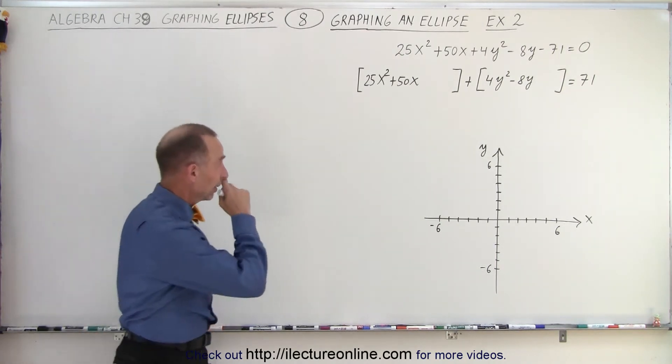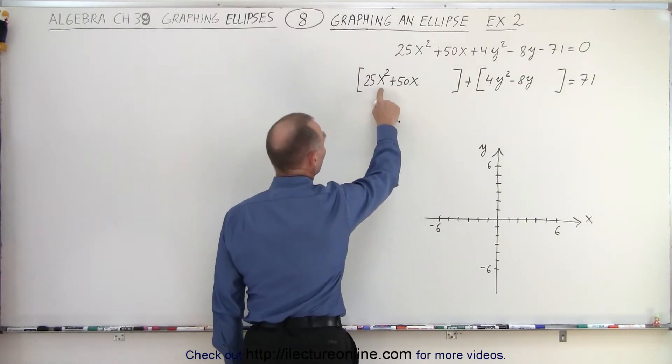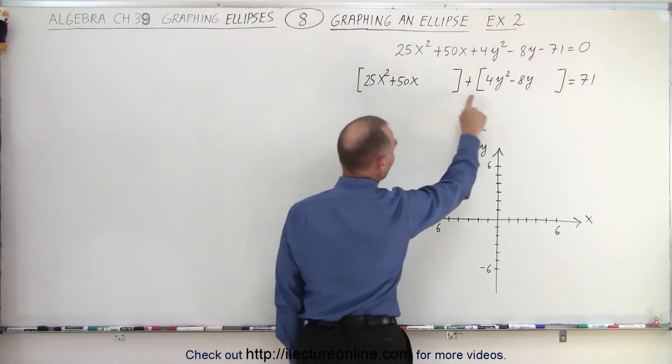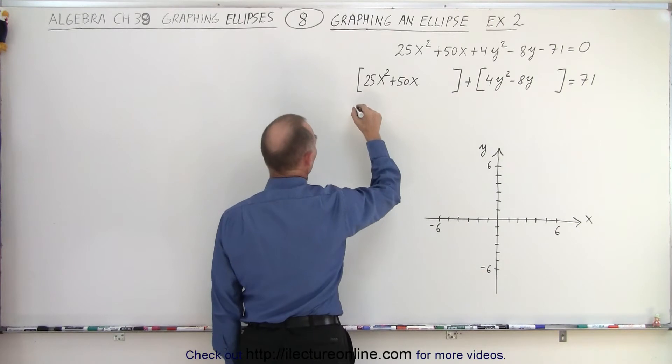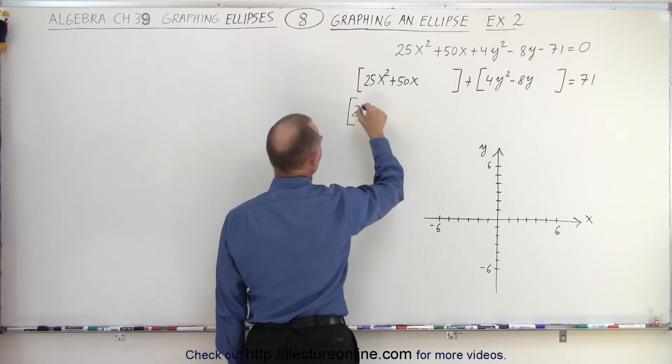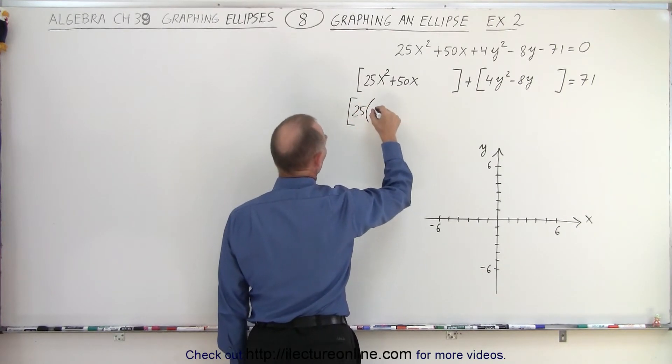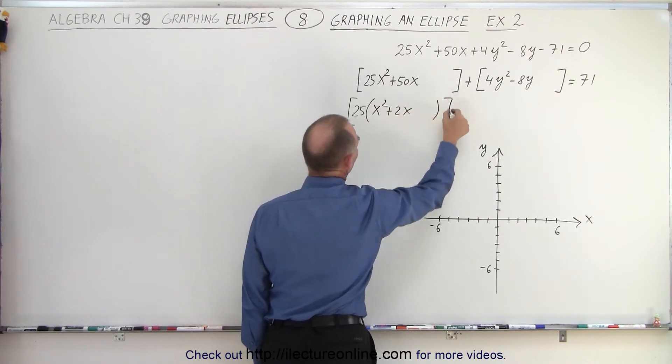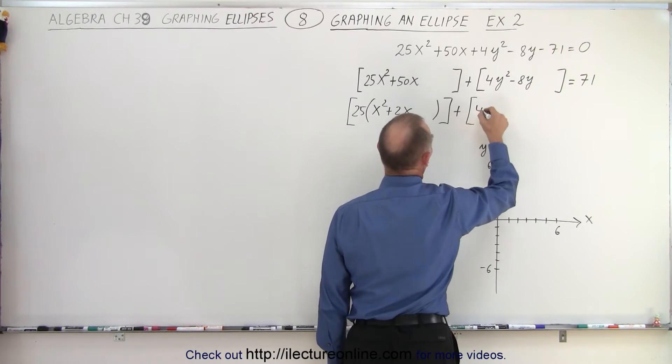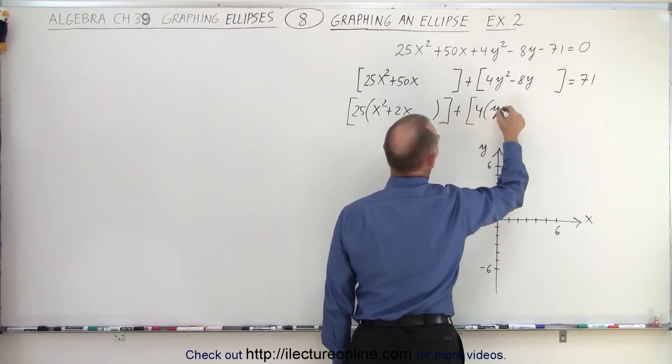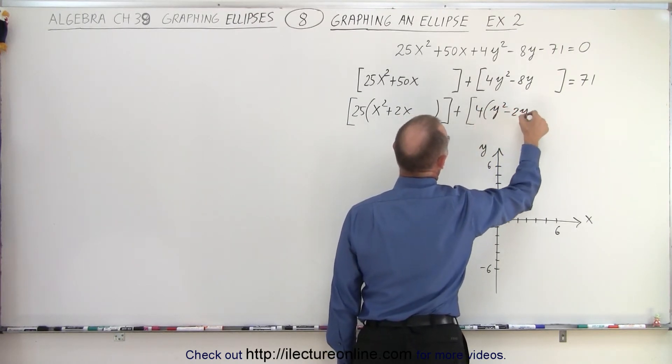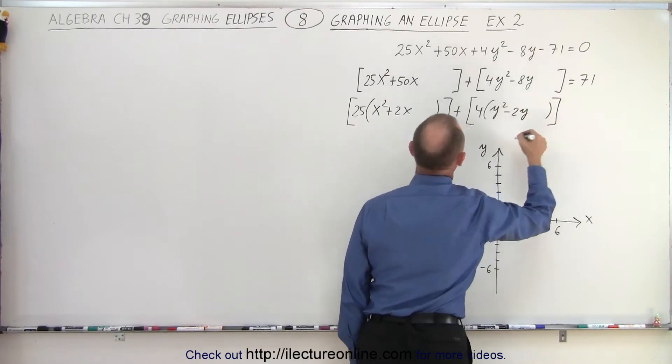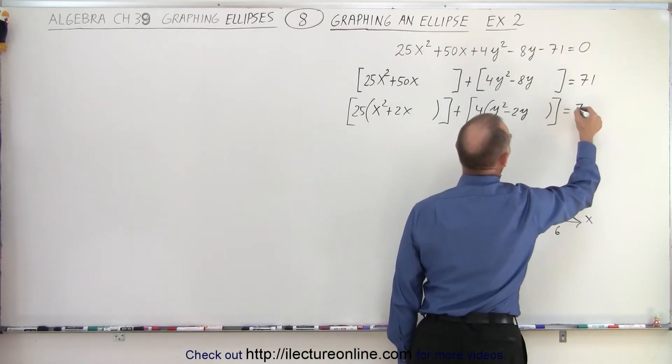Then we should factor out the coefficient in front of the square terms. So we factor out 25 here, we factor out 4 there. That gives us 25 times (x² + 2x), leave space, plus, here we factor out 4, we get 4 times (y² - 2y), again leave some space, and that equals 71.